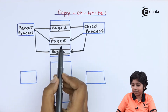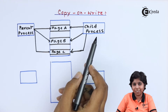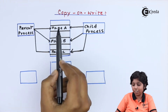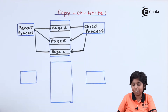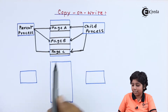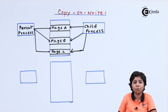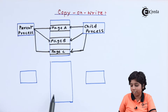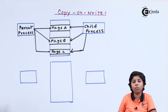Here we can see that both the parent and child processes are using page A, page B, and page C, which are shared among these processes. Now if either the parent or child process wants to modify page C, a copy of page C will be created in physical memory and given to both the parent and child processes.